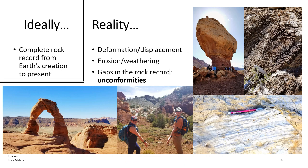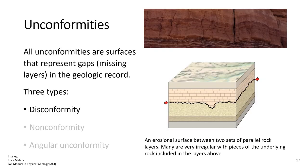In an ideal world, we would have a complete rock record from Earth's creation to the present day all over the world. However, plate tectonics — which you'll learn more about in one of next week's labs — causes rock layers to deform or be displaced. Erosion and weathering also eat away at the rock record, leaving gaps called unconformities. Unconformities can be caused by either erosion or just a lack of deposition, and though all unconformities represent gaps in the rock record, there are three main types.